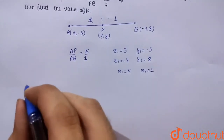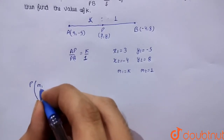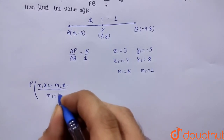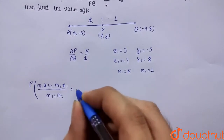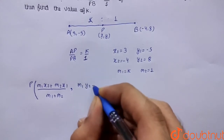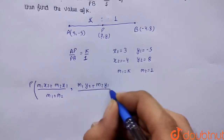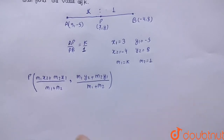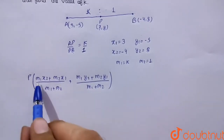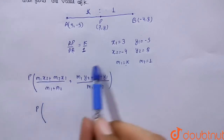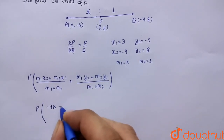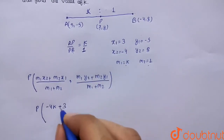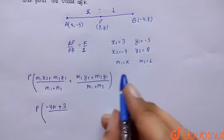We know that the coordinates of P can be found by the section formula: x-coordinate equals m1 times x2 plus m2 times x1, whole upon m1 plus m2. Putting the values: m1 is k, x2 is minus 4, so this gives minus 4k plus m2 which is 1 multiplied by x1 which is 3, giving 3, whole upon k plus 1.